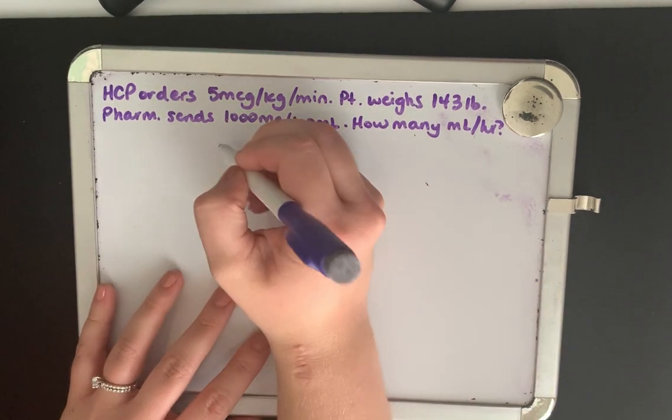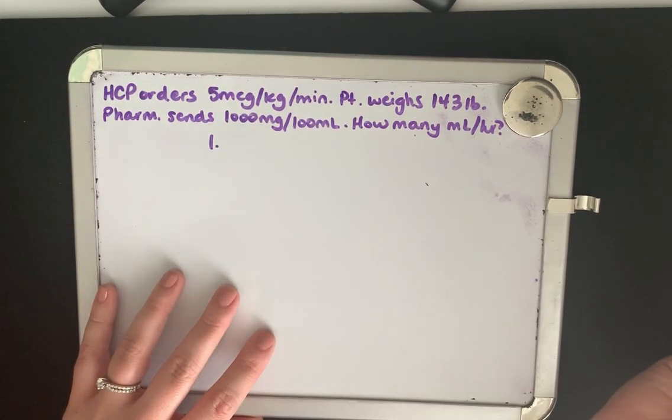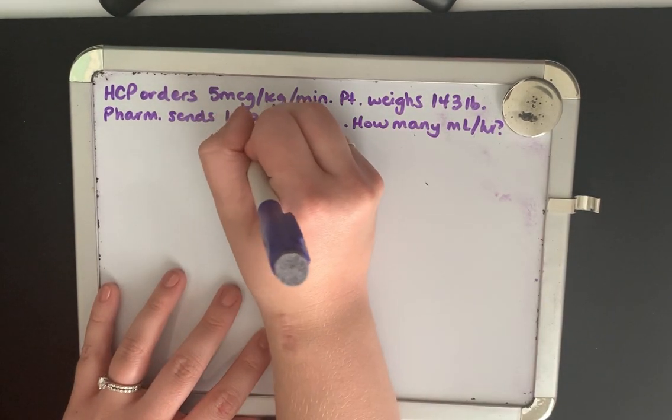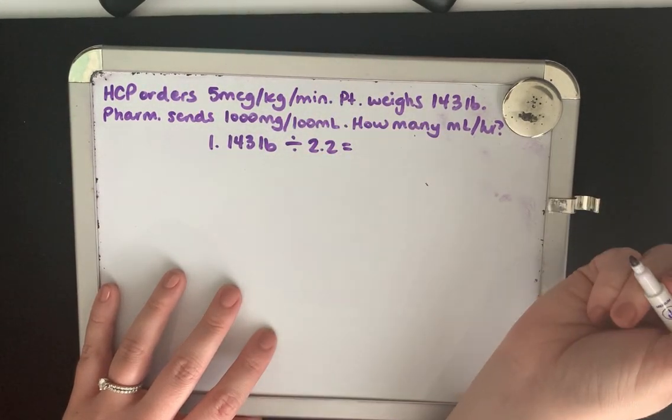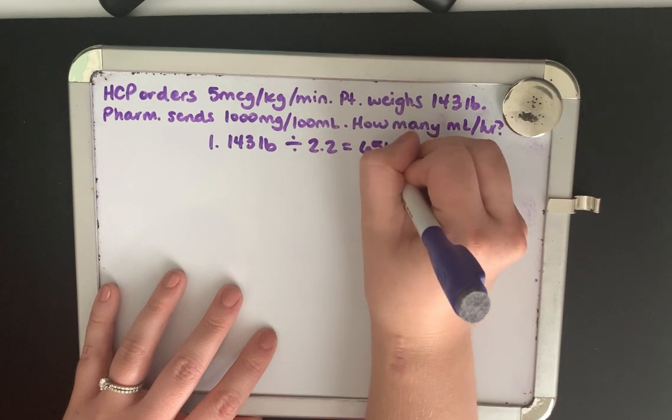So as always let's start with converting our patient's weight. So they weigh 143 pounds. We divide this by 2.2 and that ends up with 65 kilograms.